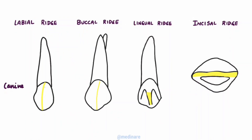The labial ridge is very prominent in maxillary canines compared to mandibular canines. The buccal ridge runs cervico-occlusally at the center of the buccal surface of premolars, extending from the cusp tip to the cervical region, and is most prominent in the first premolar. The lingual ridge runs cervico-incisally at the center of the lingual surface of canines, extending from the cusp tip to the cingulum in the cervical third, thereby dividing the lingual fossa into two parts.